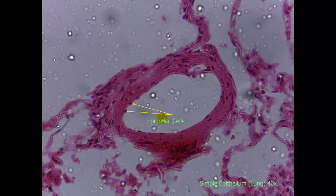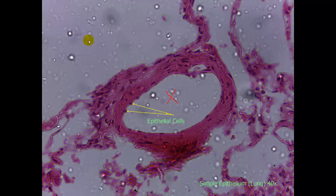Here we have a slide at 40x objective of simple epithelium in the lung. When you are looking for epithelial tissue, this is lining tissue that has very little matrix outside of the cell, so you won't see much or any vascular tissue such as blood vessels within it. You are going to be looking for the lumens, such as you see here. A lumen is an open space within the tissue slide, or at the edges of the slide itself. You will find epithelial tissue in either of those two places.